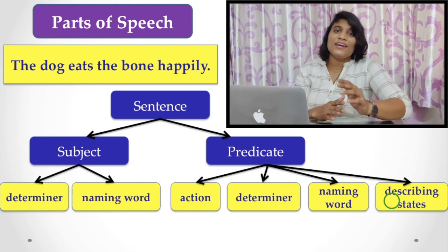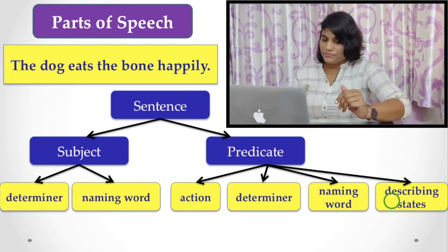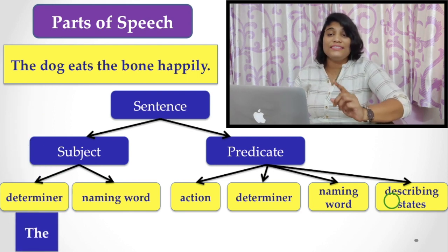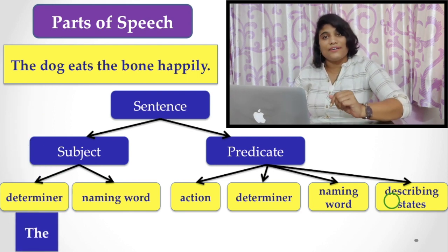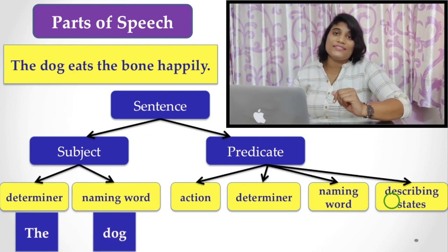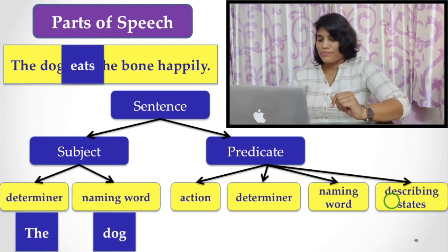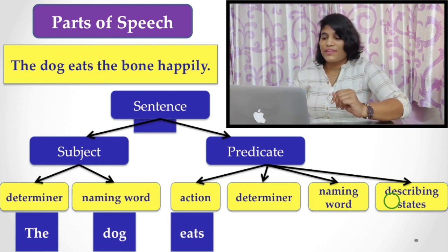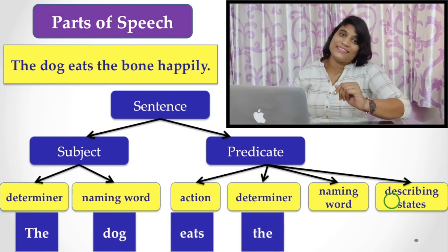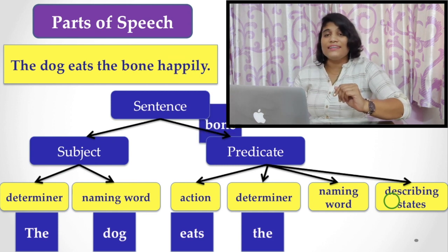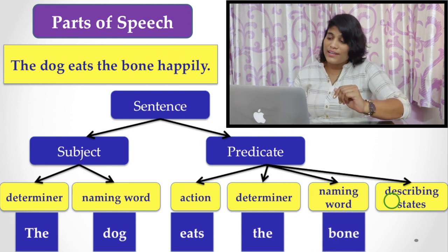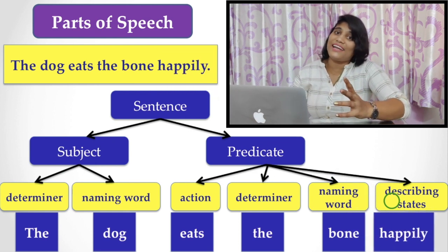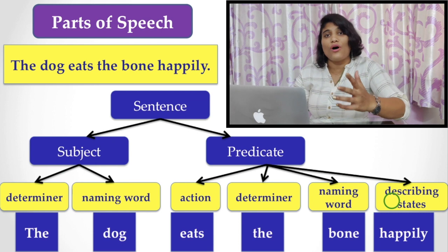Now let's see what they are. Here, 'the dog' - the is a determiner, then the dog is a naming word, eats is an action word. Again, the is a determiner and bone is a naming word. And happily describes the state of the dog, how dog feels.